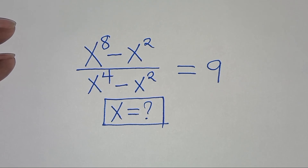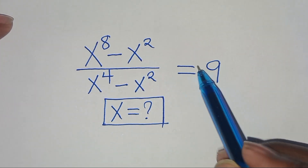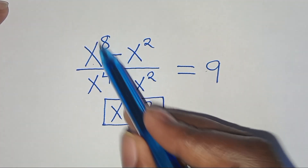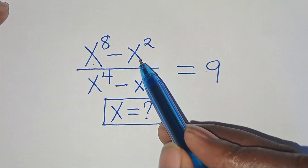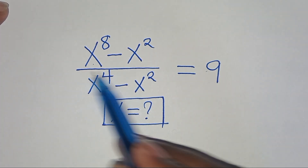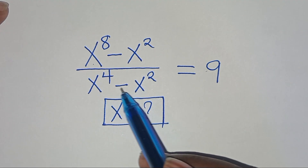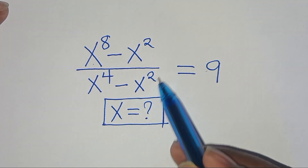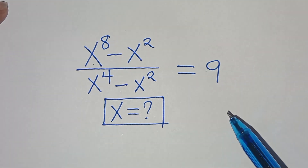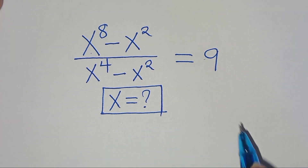Hello everyone, you are welcome to solve this nice algebra problem, which is x to the power of 8 minus x to the power of 2, divided by x to the power of 4 minus x to the power of 2, this is equal to 9. So what is the value of x?